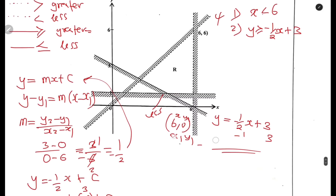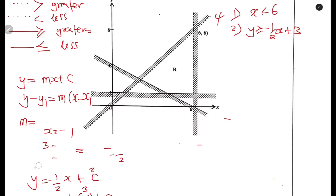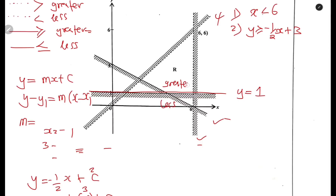For the third inequality, this line is cutting at 1 on the y-axis, so the line is y = 1. The top part of the line is the greater part. Since it's a solid line, we use greater than or equal to. So y ≥ 1. That is the third inequality.